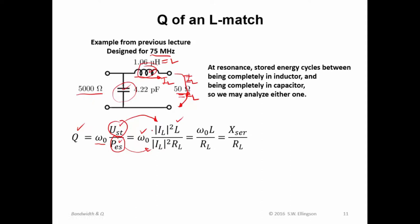Well, look what happens here. Magnitude I sub L squared cancels with magnitude I sub L squared. That leaves us with omega naught L in the numerator and R sub L in the denominator. Well, you should recognize omega naught L as the reactance of that inductor. And R sub L, of course, is just R sub L.